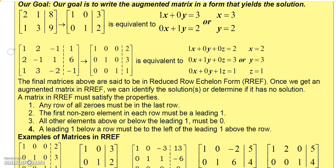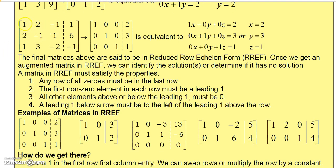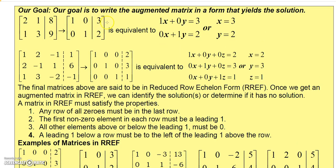For a larger three-equation, three-unknown system, we want the left side of the augmented matrix to be 1 0 0 for the first row, 0 1 0 for the second row, and 0 0 1 for the third row. Whatever the constants turn out to be gives your solution — so 1x = 2, 1y = 3, and 1z = 1 means x = 2, y = 3, z = 1.